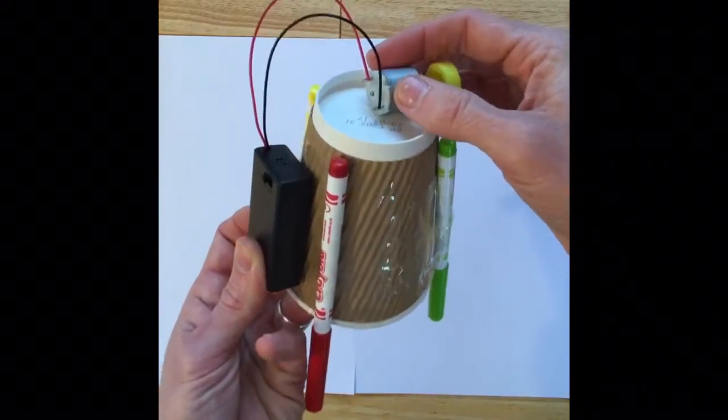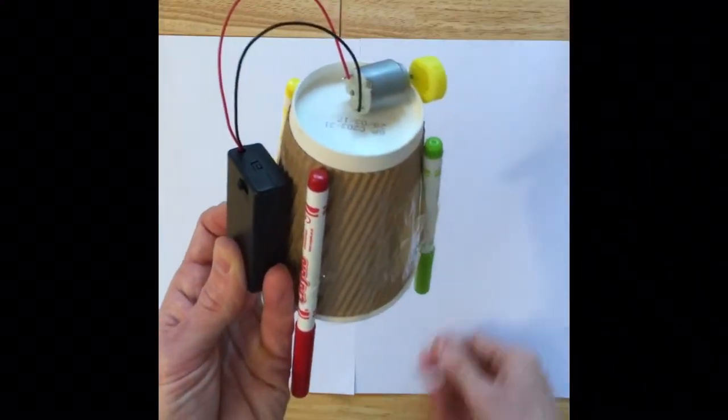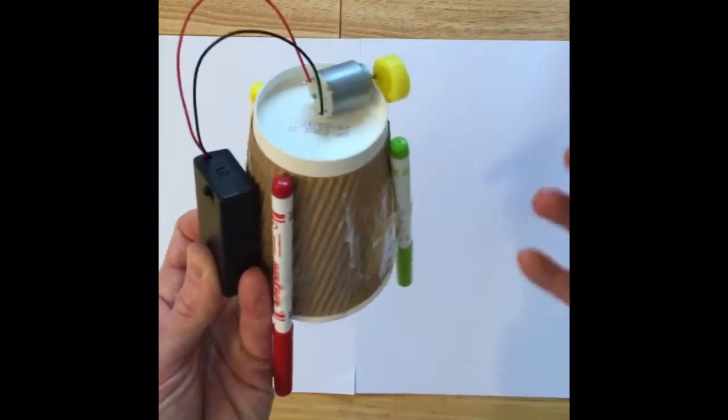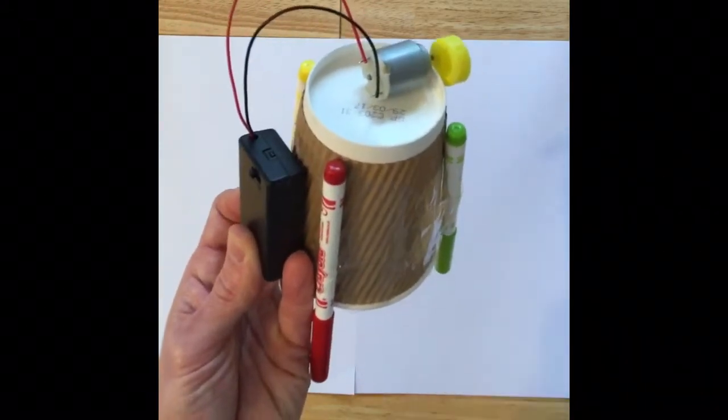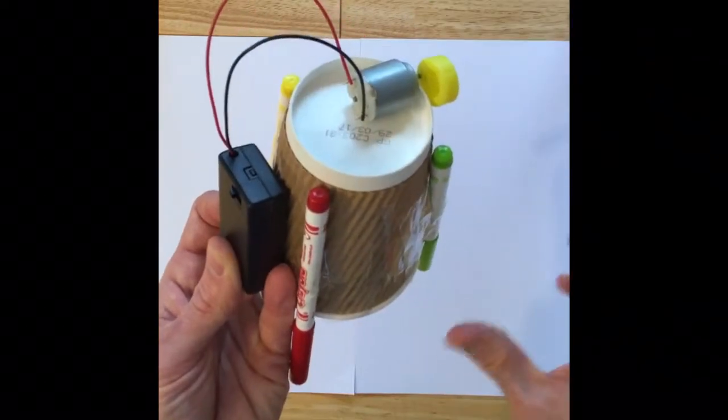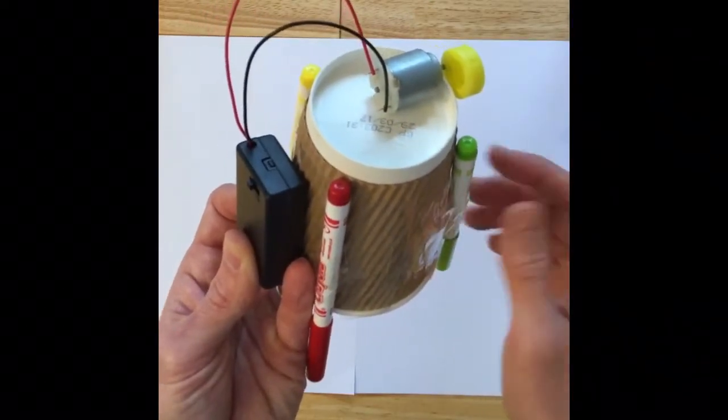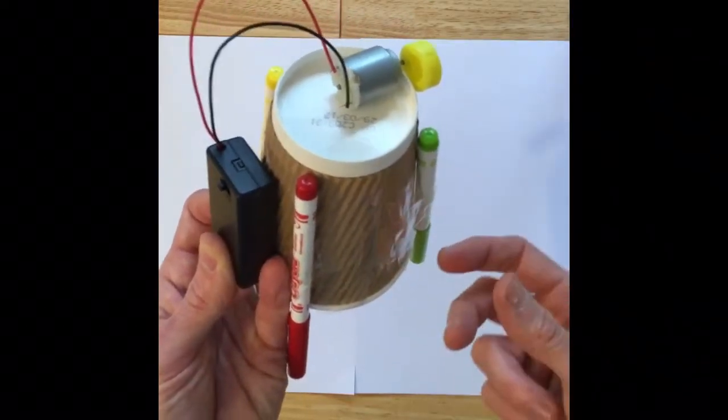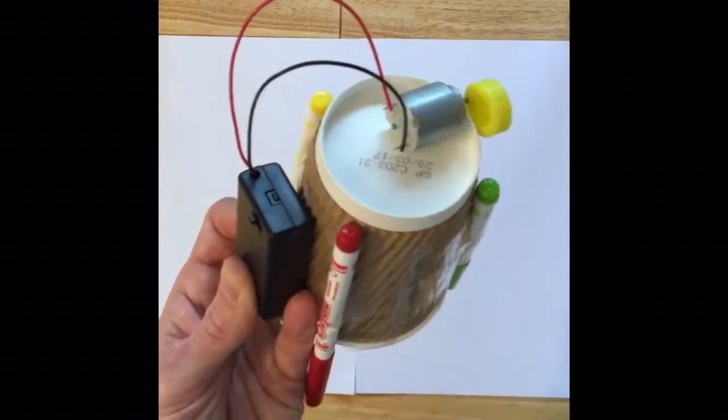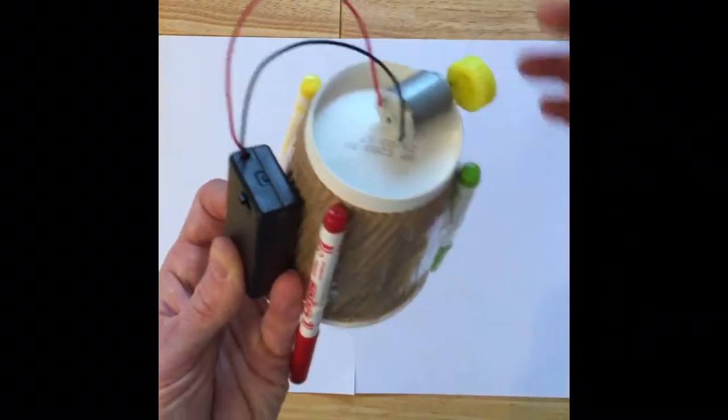That's a little investigation the children can do as well if you wish, or you can simply tell them that these are the resources you have and this is how you're going to construct it. There's different options there depending on the learning that you're doing with the children. Is this an investigation, or actually is the learning going to be about how the bot works and moves?